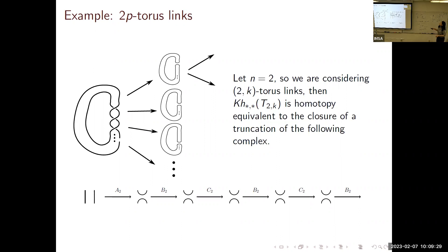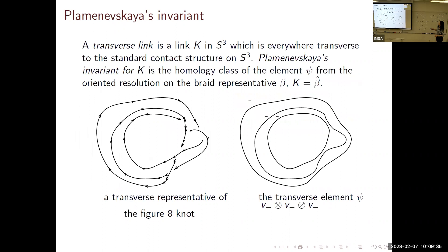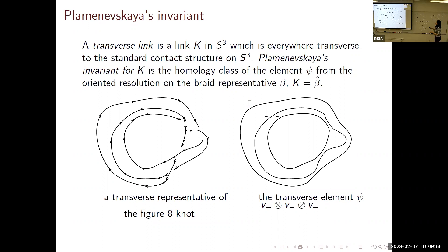I'll talk briefly about the Plamenevskaya invariant and how you could get that from this setup—this is a structure theorem about reducing something with infinitely many generators to something homotopy equivalent with only finitely many enumerable generators at each grading. And then I'll talk about the proof, which is straightforward but we're close to the end.